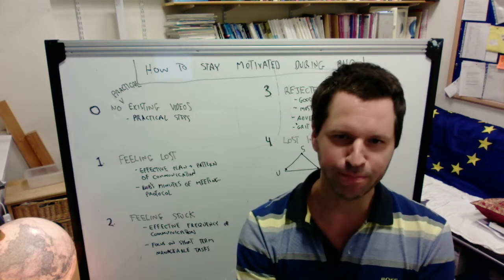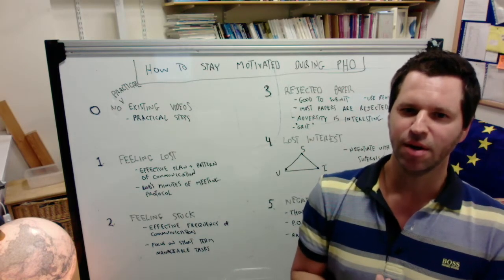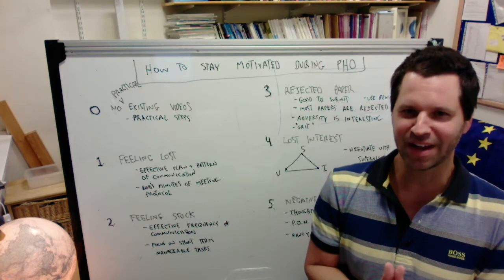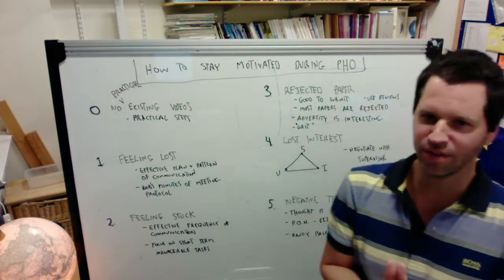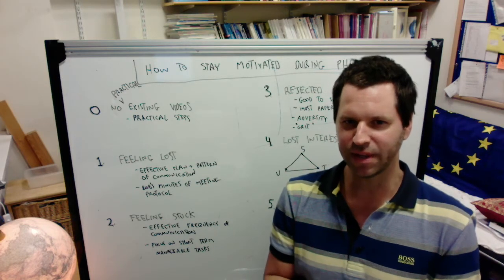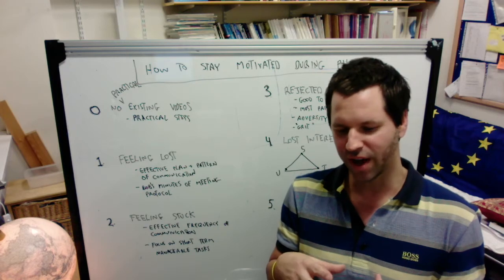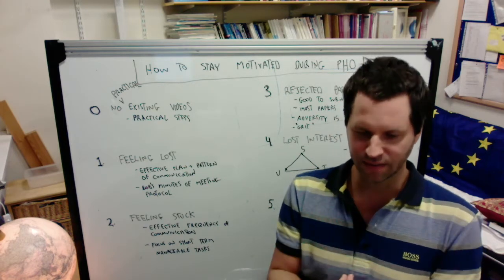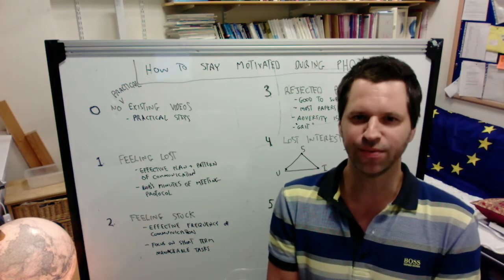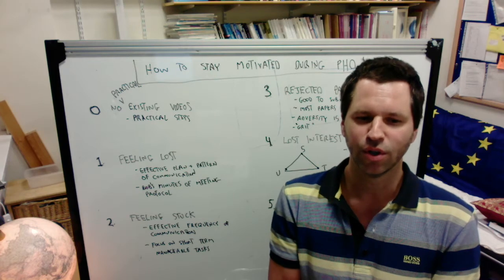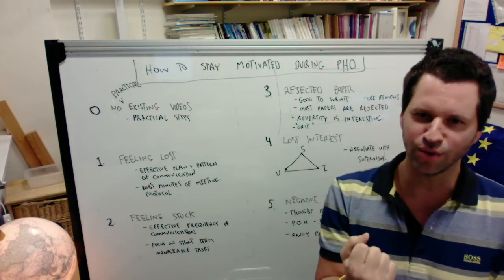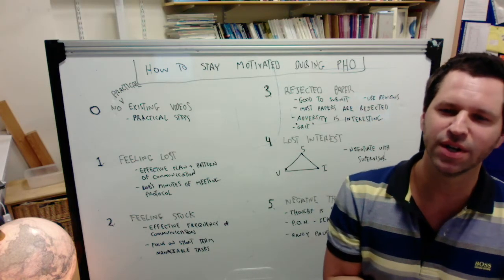My advice for this situation basically hinges around an effective plan and pattern of communication between you and your supervisor. Normally what happens in meetings is there's no real plan. You just show up, maybe people say things, and then you leave. But there's generally no structure or plan, no special pattern that is followed.